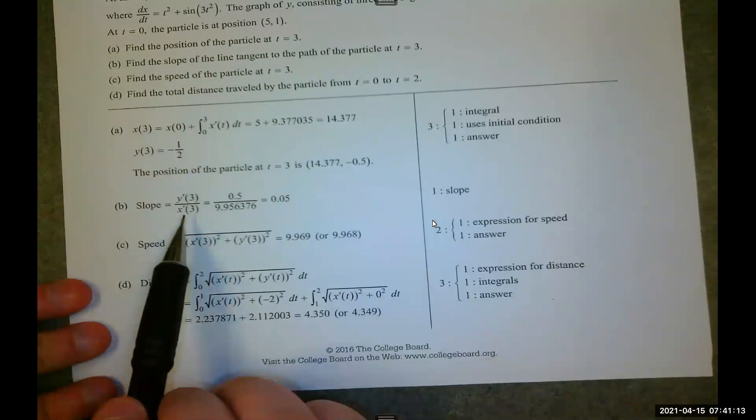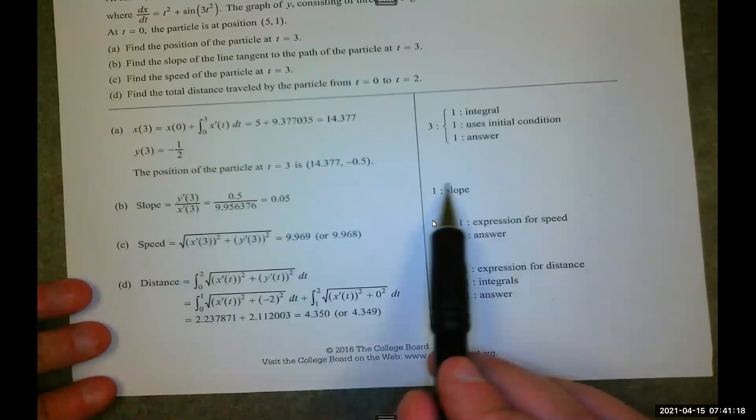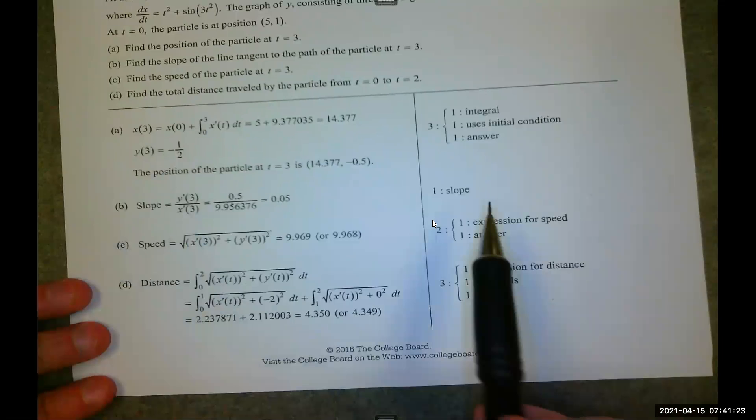Letter b, you'll notice they did something different again. They did y prime and x prime. Same thing though. Get here. One point for the entirety. If you just have 0.05, that's no point. That's the bald answer. Zip, zilch, zero.